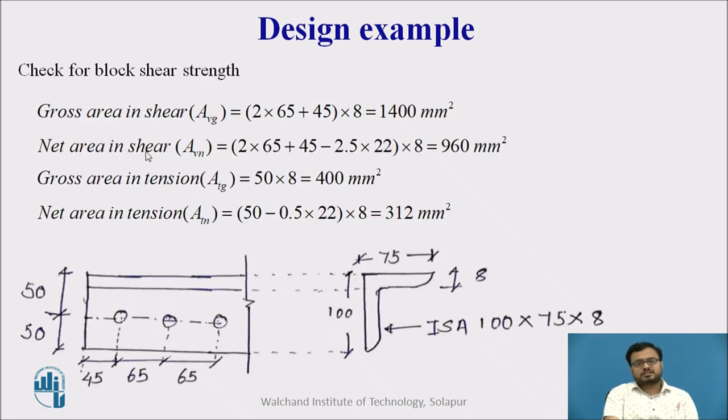Then we will determine the strength in block shear. First of all, AVG is the, this is the shear plane. This is the tension plane for the gross shear. We take this much length. So 2 into 65 plus 45 into 8 and net area. We have to subtract the diameter of these bolts. 2 into 65 plus 45 minus 2.5 into 22. How this 2.5 comes? This one, this one and this half.